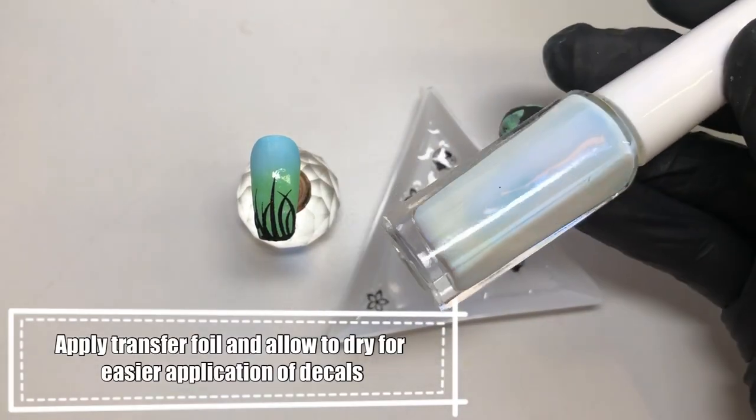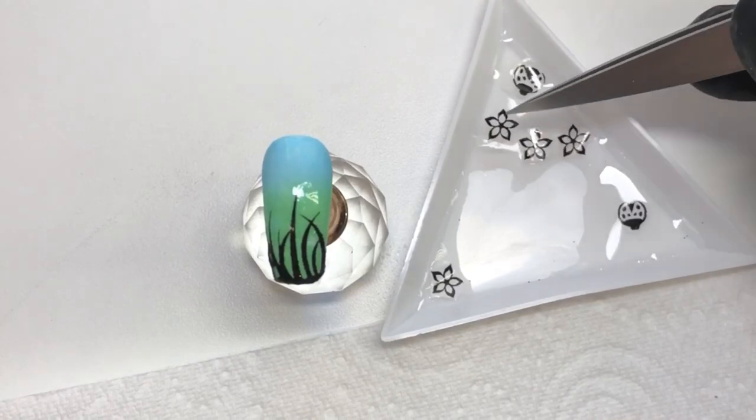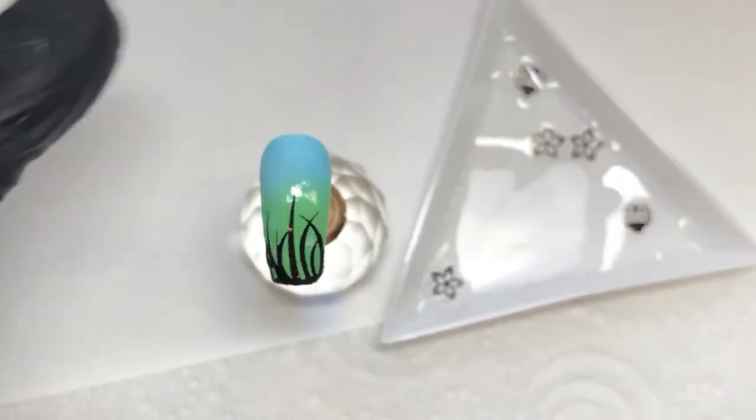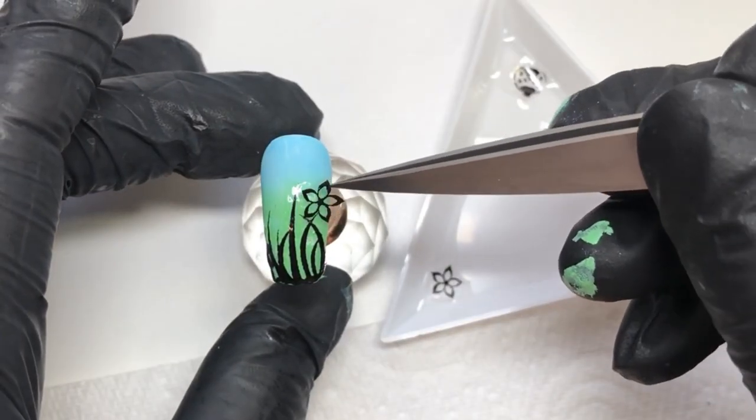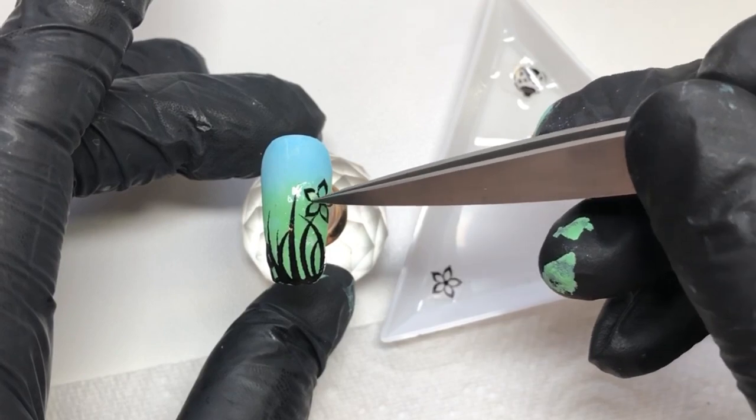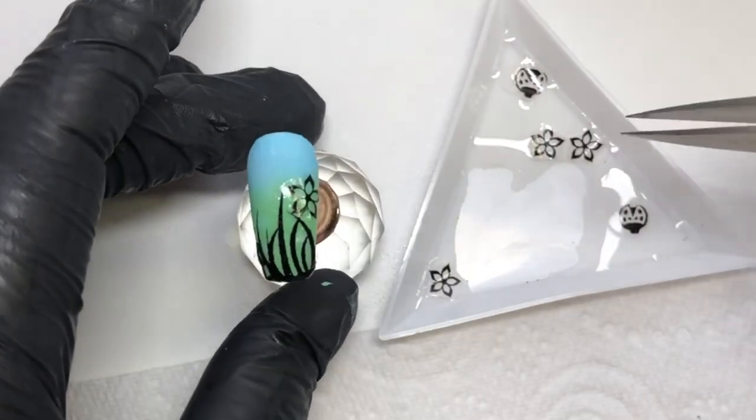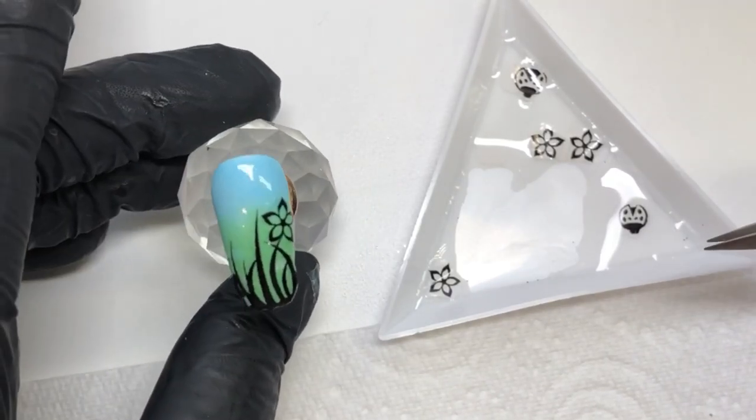If you really are struggling with applying it with the water because sometimes it can be really fiddly, just apply some transfer foil glue onto the nail, let it dry, and then when you take it out of the water, make sure that you wipe off the excess. I forgot then so I've just put this somewhere else.